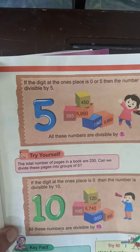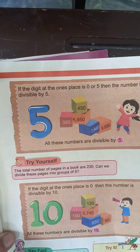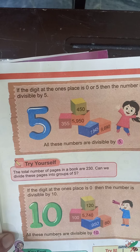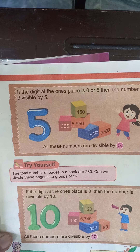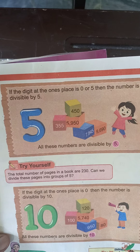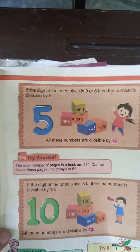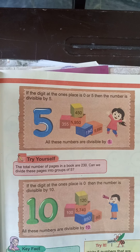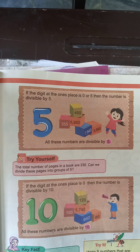If the digit at the ones place is zero or five, then the number is divisible by five. Thik hai, bahut asan hai, bahut simple hai. Aur five ka table toh sab ko aata hai — aapki clock pe bhi five ka table hota hai. Toh in numbers ko find karna bahut asan hai. Agar aapke paas one's house mein zero or five — ye two digits hain — toh it means woh divisible by five hoga.